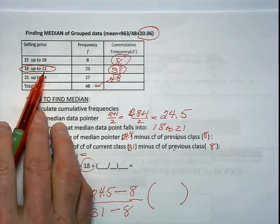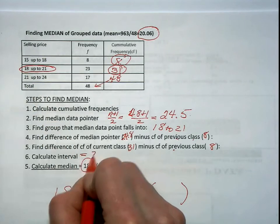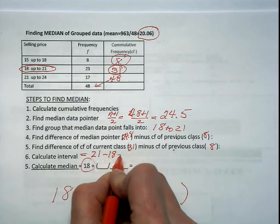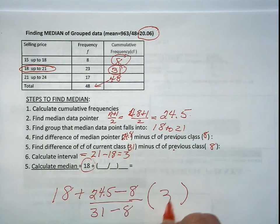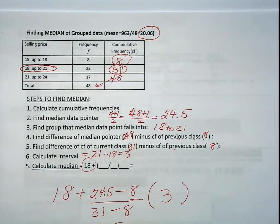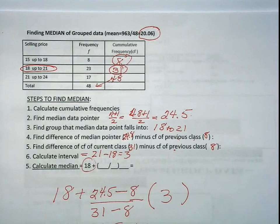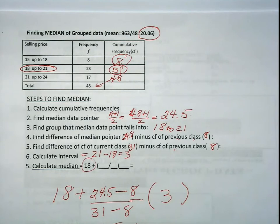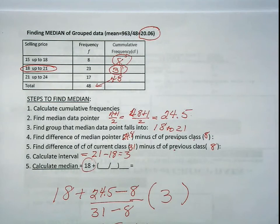And don't forget to multiply it by the interval. The interval is the max minus the min. So in this case, 21 minus 18 or 3. So we put 3 here. When we do this calculation, we have 16.5 over 23 times 3, 18 plus 2.15. And we got 20.15 is our median.